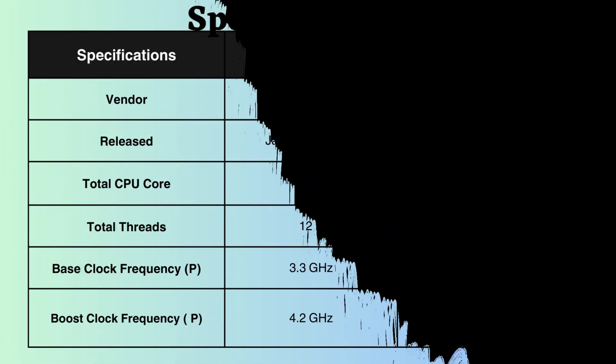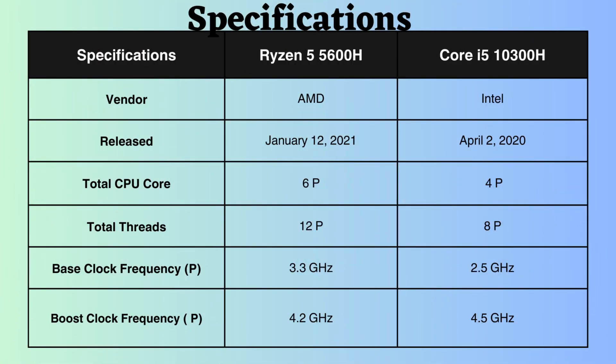The Ryzen 5600H was released approximately 8 months after the Intel 10300H. The Intel 10300H features 4 performance cores and 8 performance threads, while the Ryzen 5600H boasts 6 performance cores and 12 performance threads. Having more cores and threads proves beneficial for multitasking and handling demanding workloads such as video editing or 3D rendering.